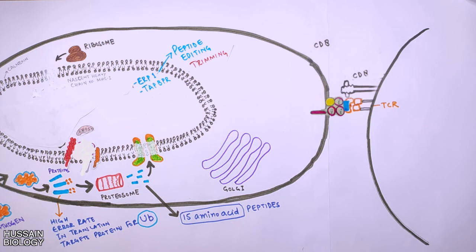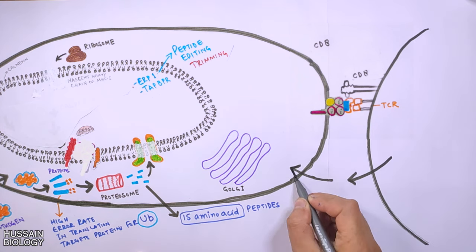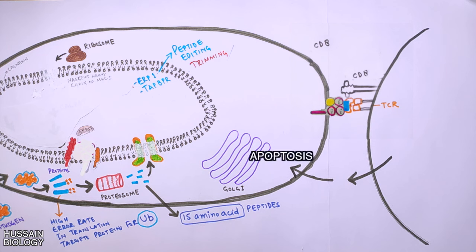After all these events, the cell sends out the chemo signaling to knock out the cell via apoptosis. So this is how the MHC-1 processing and antigen presentation works within the cell.